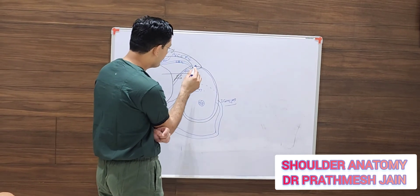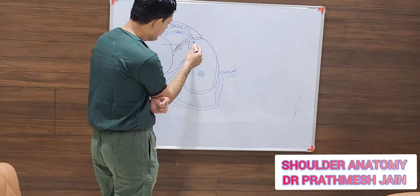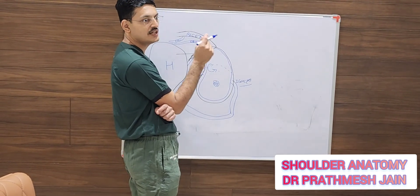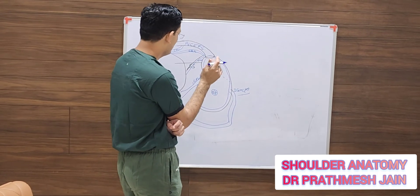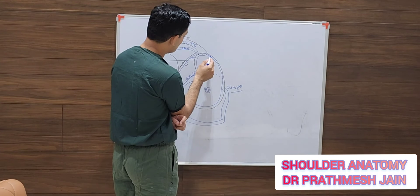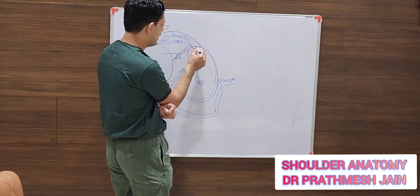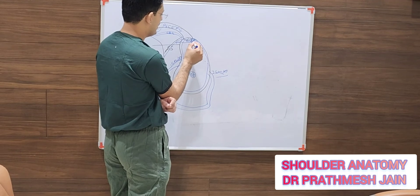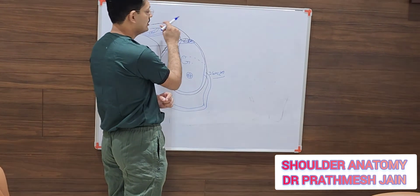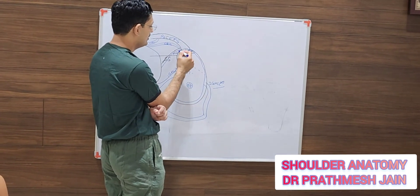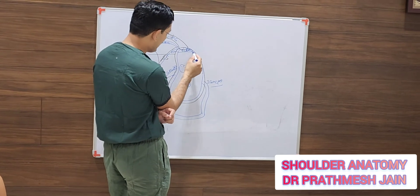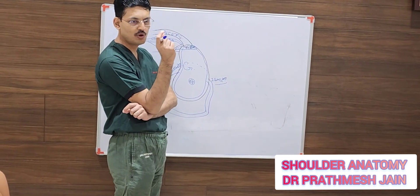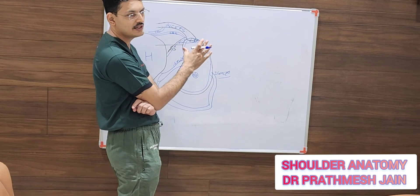The innermost layer is the labrum, which covers the glenoid 360 degrees — from superior to anterior to inferior to posterior. At the superior aspect, the labrum is continuous with the biceps tendon, which is why this region is called SLAP — Superior Labrum Anterior to Posterior. The posterior labrum is a little smaller in size compared to the anterior labrum, which is more robust.